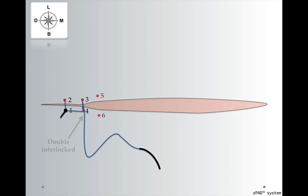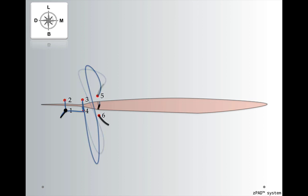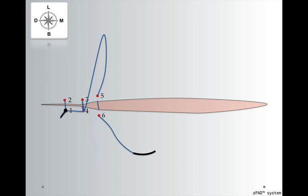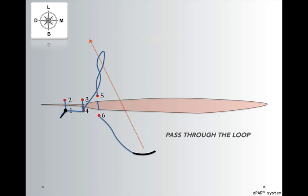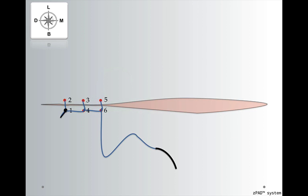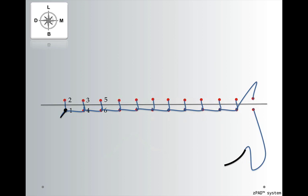Let's see again how it works. We're going to enter through the mesio lingual, exit through the mesio buckle. Once we have the loop, we're not going to pass the needle through it — we're going to twist it twice. Only then pass the needle through it, pull the needle and suture material towards the buckle, and create the double interlocking that is stable and secure. We can repeat the same pattern throughout suturing of the whole flap, and this will ensure that the flap is not going to open up immediately after the procedure and throughout the healing period.